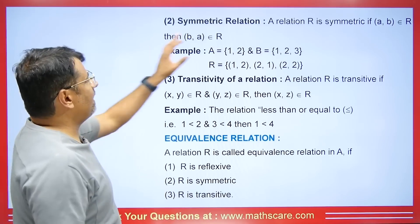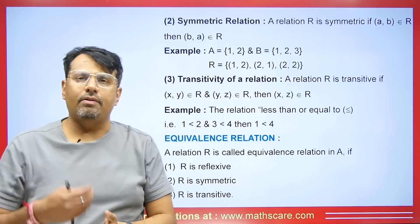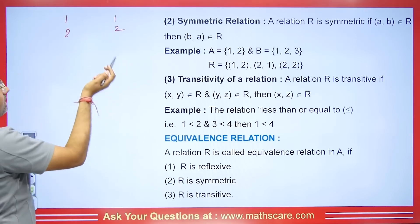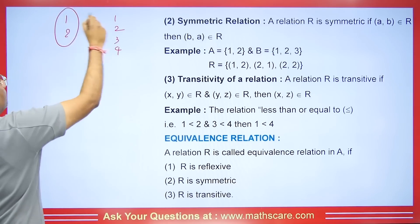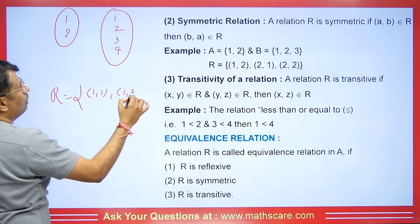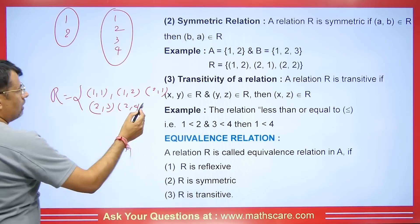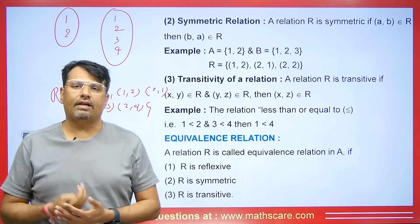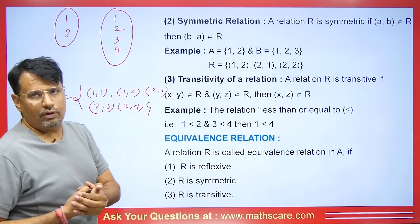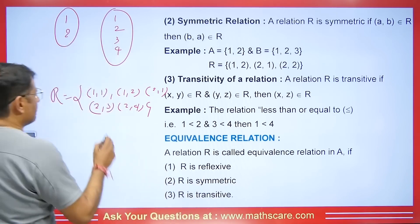Next, we will talk about whether a relation is symmetric. The concept of symmetry is that if (a, b) belongs to R, then (b, a) should also belong to R. For example, suppose we have a relation with elements (1,1), (1,2), (2,1), (2,3), (2,4). We can see that (2,3) is there, so (3,2) should also be there. But since 3 is not producing a mapping back, (3,2) cannot be there — so this relation is not symmetric.